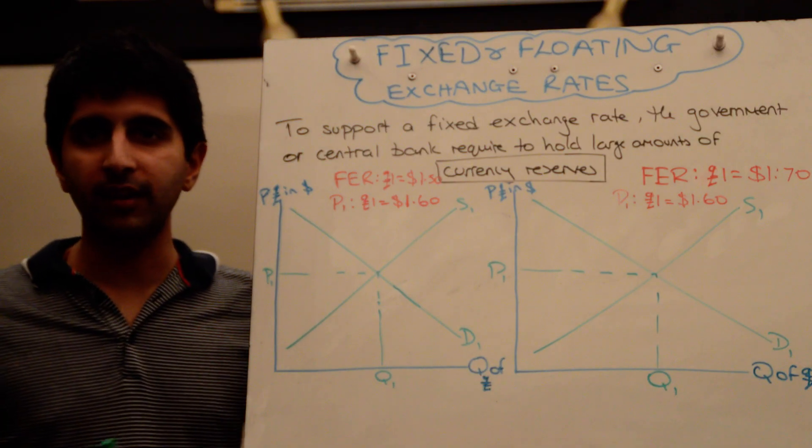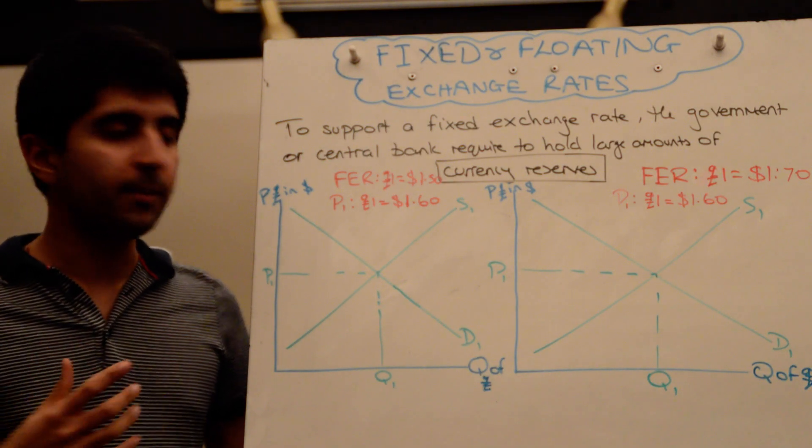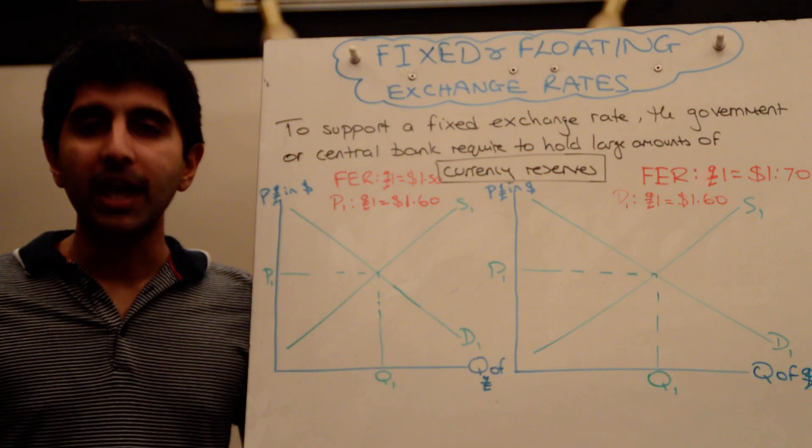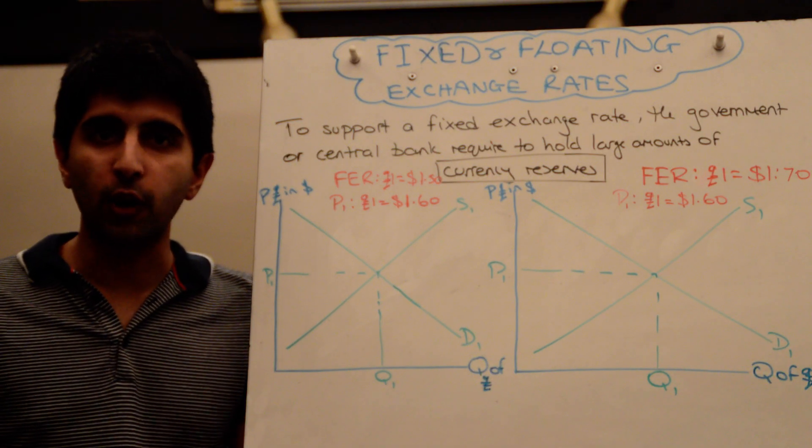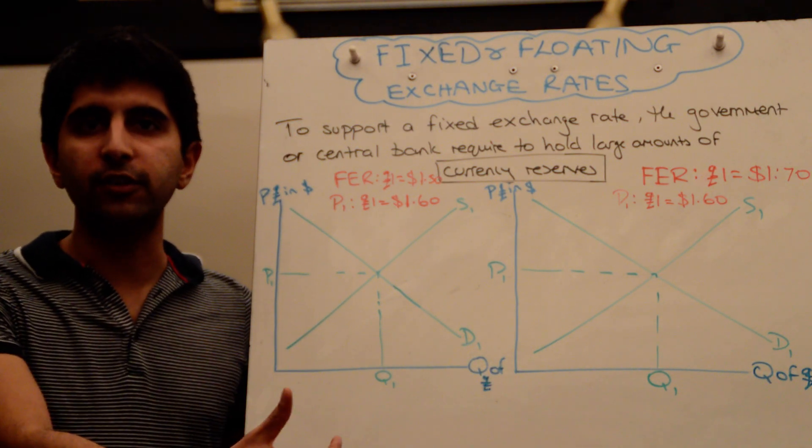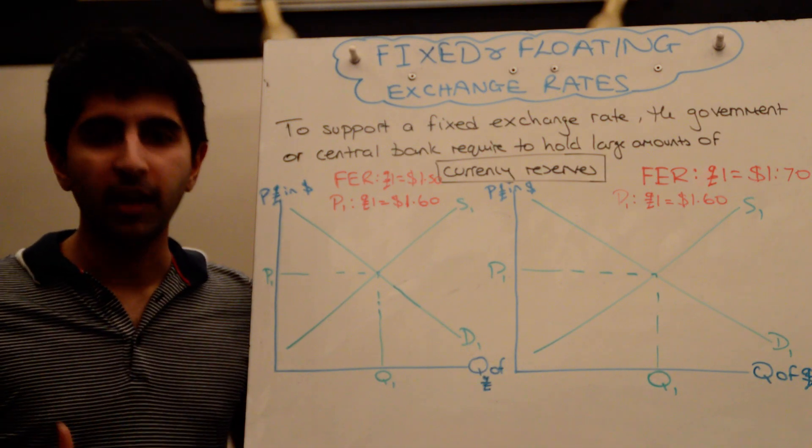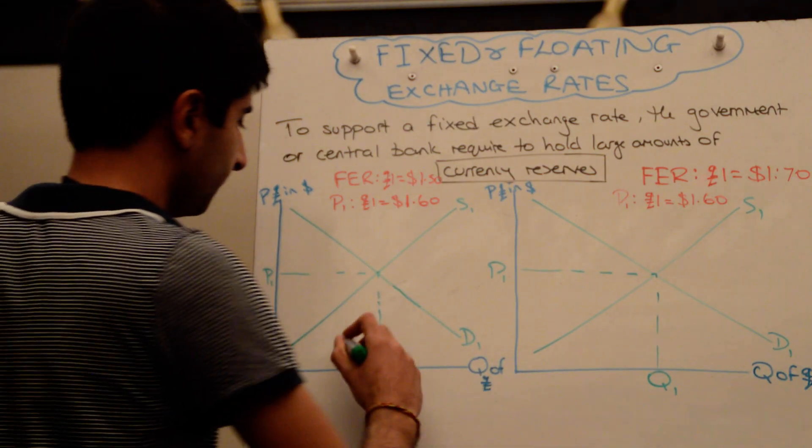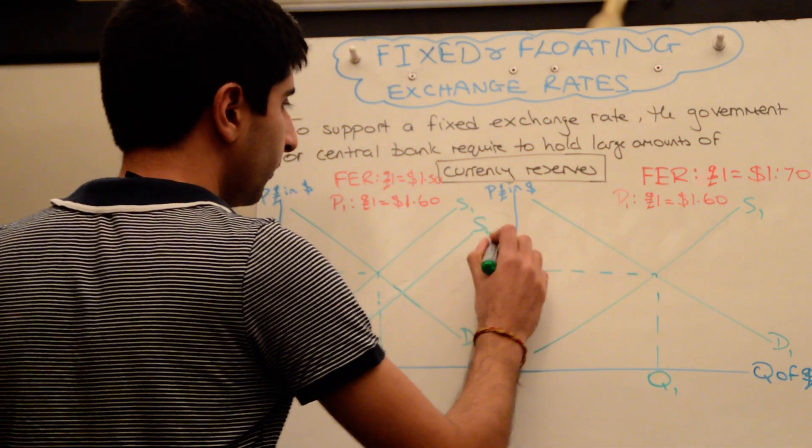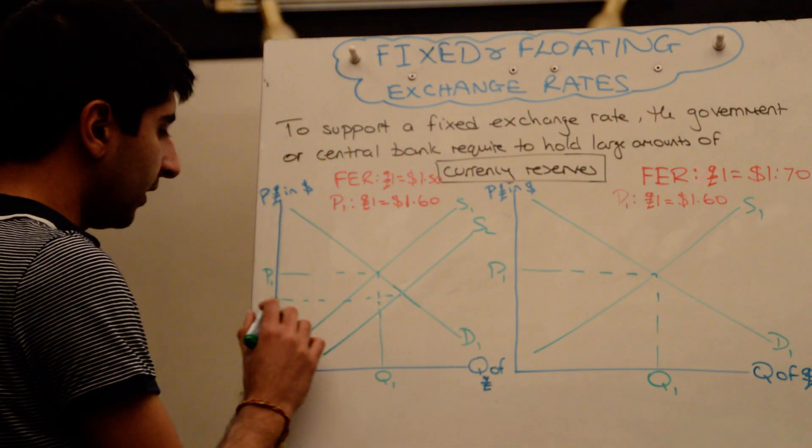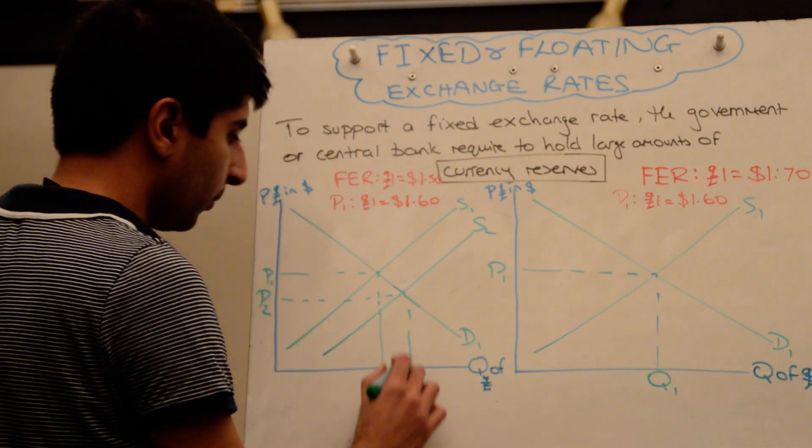So, what does the government or the central bank need to do? Well, very simply, it needs to sell the pound. It needs to use the currency reserves it's got, sell the pound currency reserves it's holding on, and buy a foreign currency instead. That will increase the supply of the pound, shifting supply of the pound to the right, reducing the exchange rate from P1 to P2.